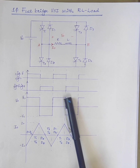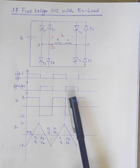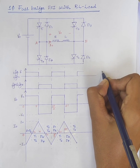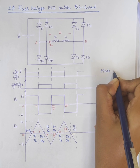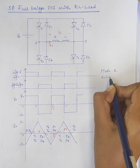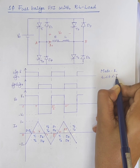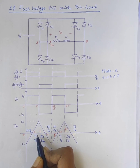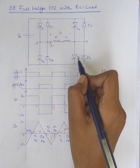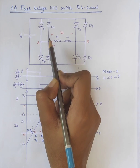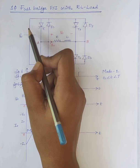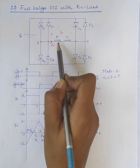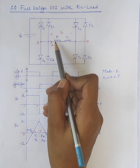The operation of this circuit is divided into 4 modes. Consider Mode 1, for the interval T1 less than T less than T. During this interval, at instant T1, the thyristors T1 and T2 are turned on. Therefore, current flows through the path: source, T1, load, T2, back to the source — so positive current I0.